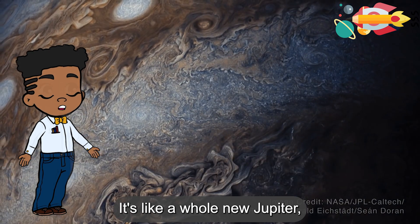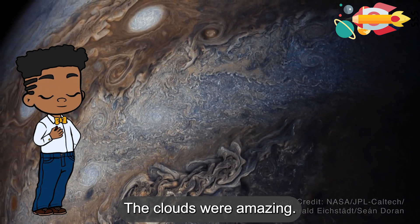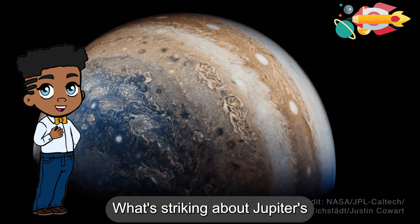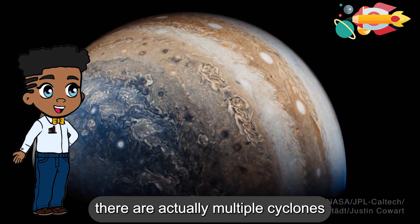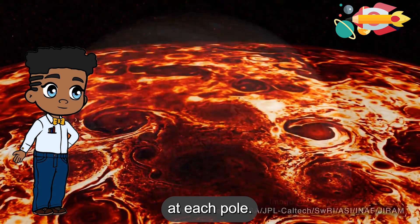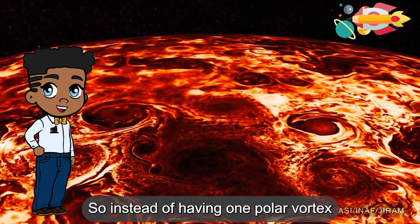It's like a whole new Jupiter. The clouds were amazing. What's striking about Jupiter's polar storms is that there are actually multiple cyclones at each pole. So instead of having one polar vortex like Earth,